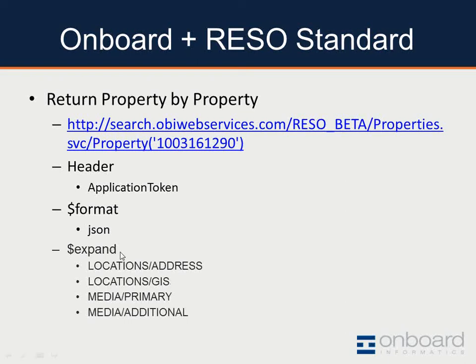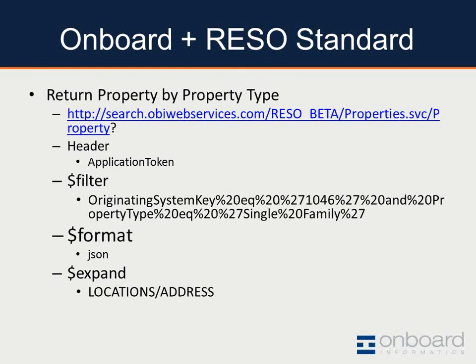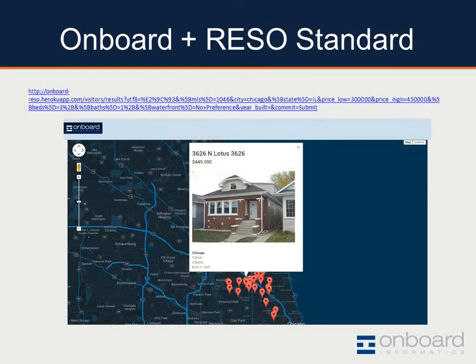I have a couple more examples of some of the data elements that you can expand out — GIS, some of the media, the primary and additional images that come with it. Here's another example where you can actually search for a property by a feed or search by a property type. We actually have a working demo where you can see the results coming back and then it's marked up with a bit of HTML.